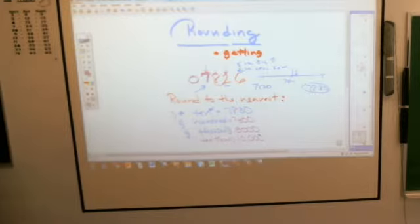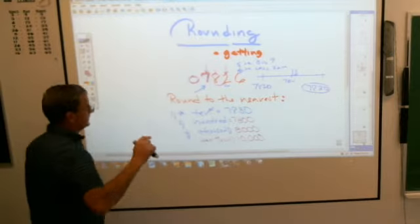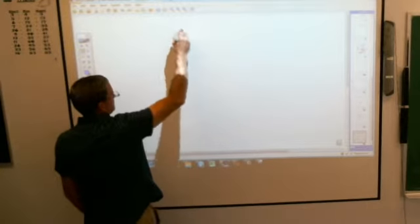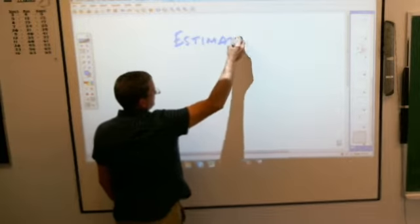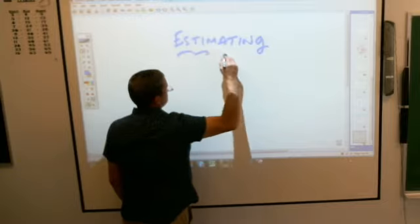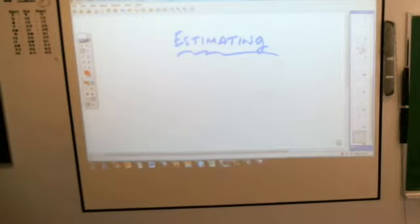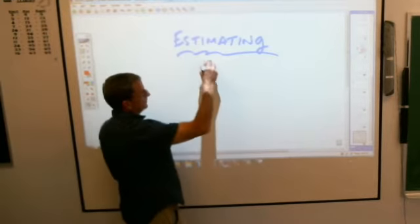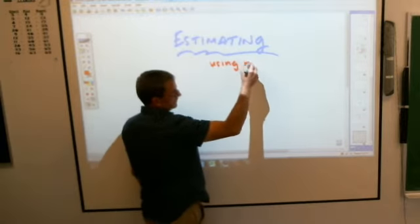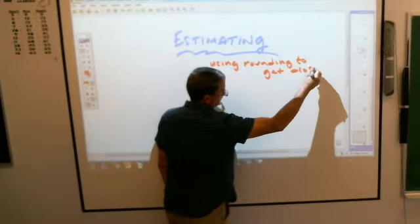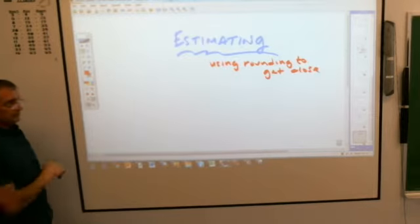Again, I think we've done enough rounding that I don't really need to beat this little plate of mine. So I'll take out a blank piece of paper because we're not done yet. Along with rounding, today we're also talking about estimating. Estimating. And again, estimating is basically using rounding to get close.